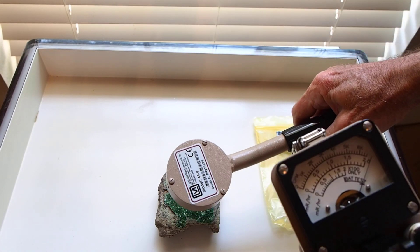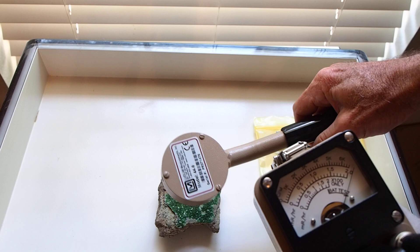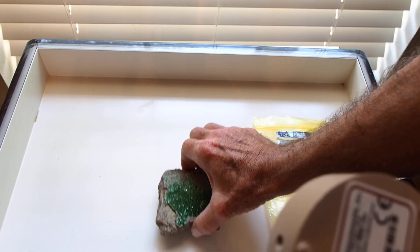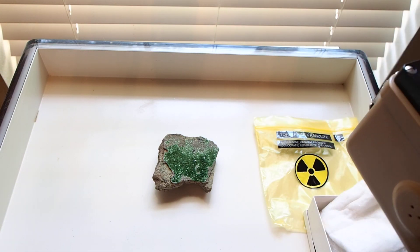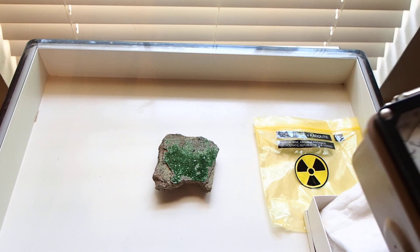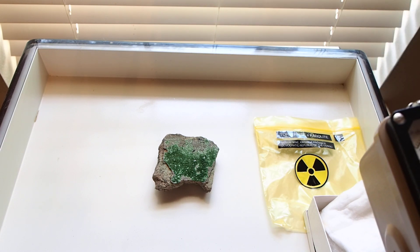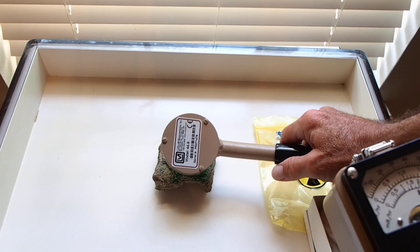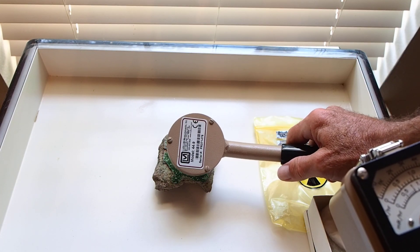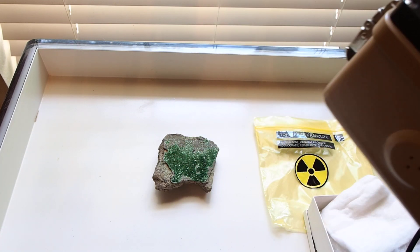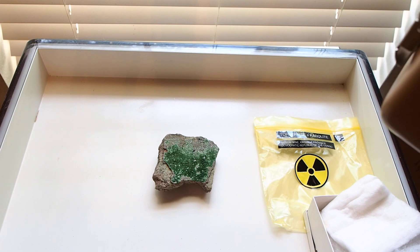We're far off the scale in a 0.01 time setting, obviously. Change to the times 10 setting, which will give us a rate count up to 66,000 counts per minute. At a distance of about an inch and a half to 2 inches, we're far off the scale. That was at the times 10 setting.